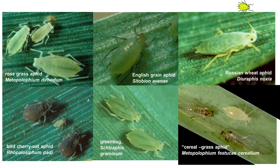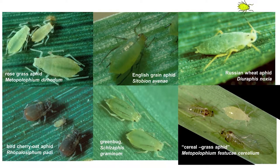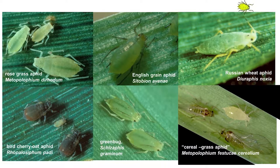There are about a dozen aphid species one can collect here. The six important ones right now are: top left, rose grass aphid; middle top, English grain aphid; Russian wheat aphid; bird cherry oat aphid; green bug, or Schizaphis graminum; and cereal grass aphid, Metopolophium festucae cerealium. This cereal grass aphid is new to the Pacific Northwest — a new member of the aphid fauna of North America. We discovered it in the REACH project, and it is widespread in the region.